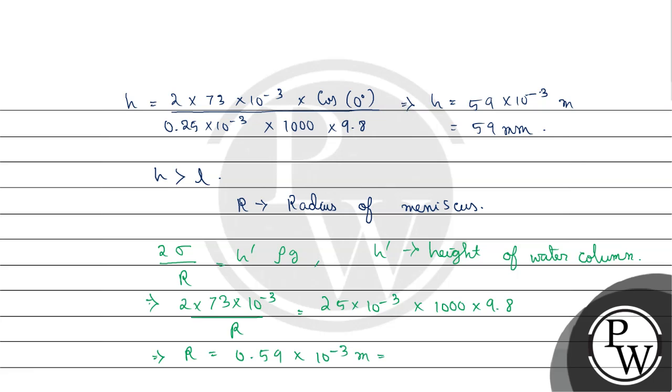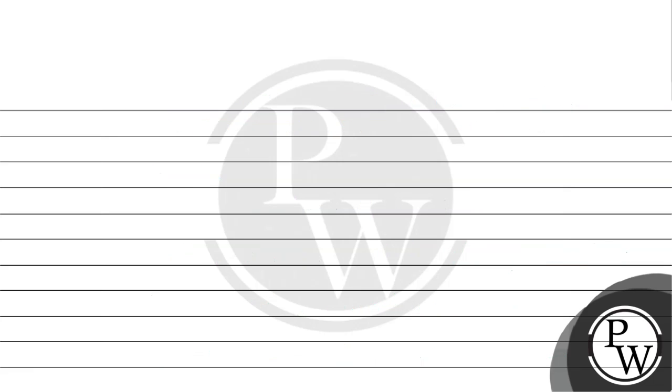Converting to millimeters, we get 0.59 mm, which is approximately equal to 0.6 mm. So our final answer is: the radius of meniscus is 0.6 mm. Hope you understood it well, best of luck, thank you.